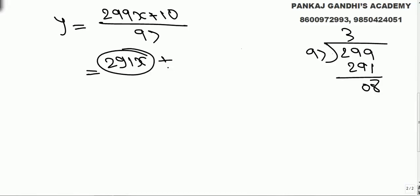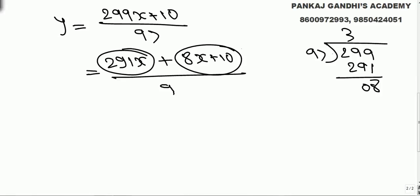We need (299x + 10) to be divisible by 97. Since 299x = 291x + 8x, and 291x is already divisible by 97, the remaining part 8x + 10 must also be a multiple of 97 for the whole expression to be divisible by 97.